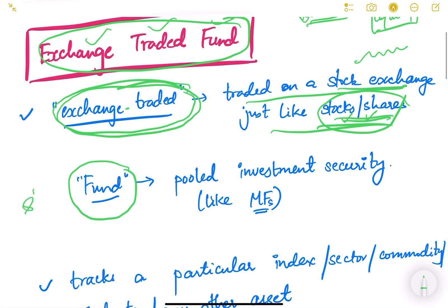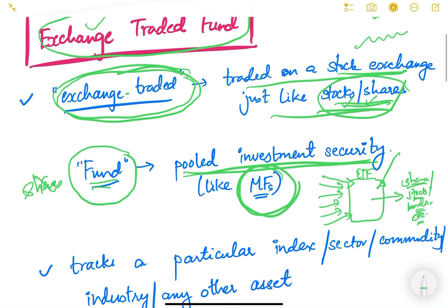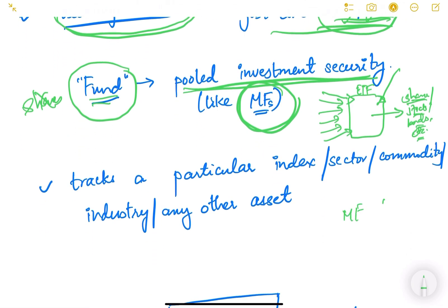An ETF is a fund — not a stock or share — similar to mutual funds. It is a pooled investment security where many small investors invest into the exchange traded fund. An ETF manager then invests that pooled money into shares, stocks, bonds, or other securities. Investors can buy units of this ETF, and whatever corpus is collected gets invested into different stocks and bonds, forming a portfolio — just like a mutual fund.